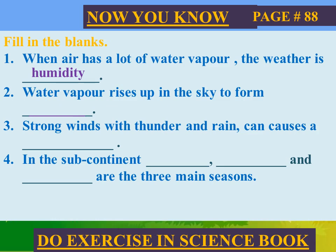Water vapor asmaan mein upar uthta hai aur badal ki shakal ikhtiar kar leta hai — badal ban jata hai. Number three: strong winds with thunder and rain can cause a storm. Garaj chamak ke saath tez hawa aur barish toofan ka sabab banti hain — answer is strong winds.